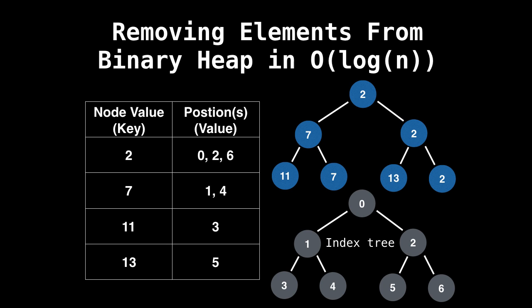Okay, so observe the blue heap. Remark that it has repeated values. Namely, we can see that the two is there three times, seven is there twice, 11 and 13 once. Below I have drawn the index tree, a tree which can help us determine the index position of a node in the tree. 11, for example, is at index three, 13 at index five, and the first two at index zero. On the left is the hash table with the key value pairs. Notice that two is found in three positions, zero, two, and six, while seven is found in two positions, one and four, and so on. So this is how we're going to keep track of the positions of the values in the tree.